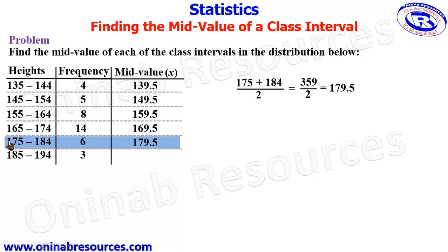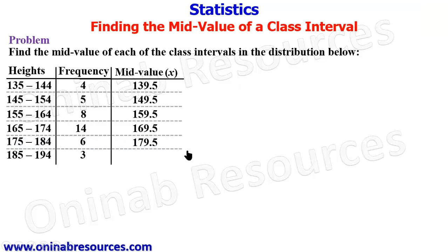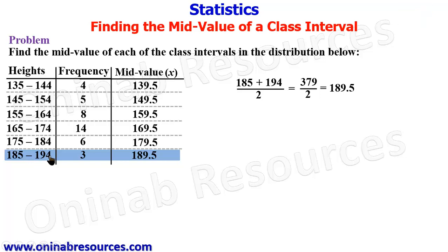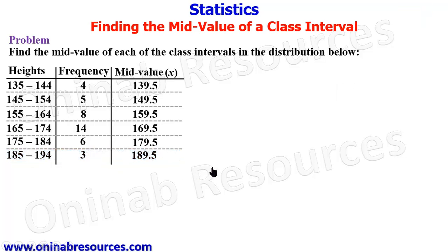For the last class interval, we have 185 to 194. 185 plus 194 divided by 2 gives 379 divided by 2, and we have our mid value as 189.5, representing the mid value of the interval 185 to 194.